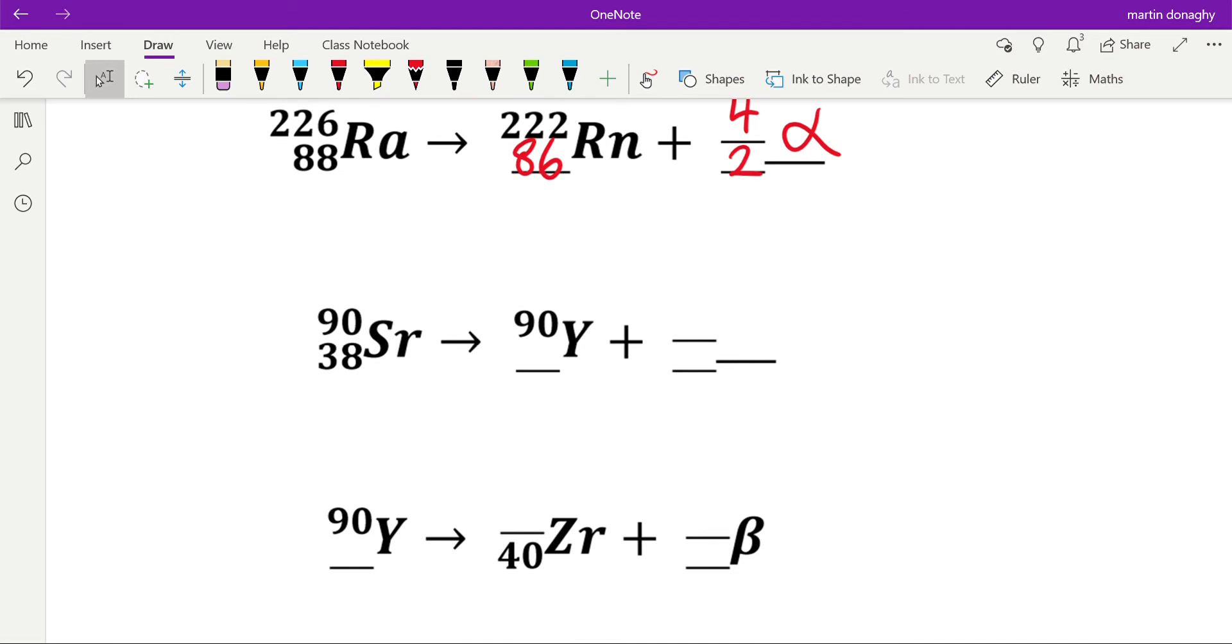Next, 90 equals 90 plus something, that has to be zero. Now we have two possibilities here: this could be beta or this could be gamma. But in fact, it has to be beta. How we know that is...